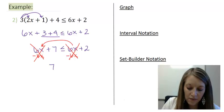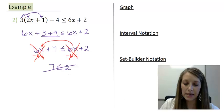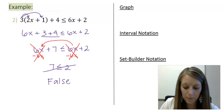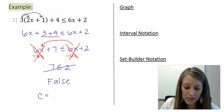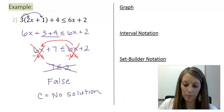That leaves me with 7 is less than or equal to 2. But 7 is never less than 2. So this is a false statement. So that means c has no solution. I cannot find any value for c that will ever make this solution a true statement.